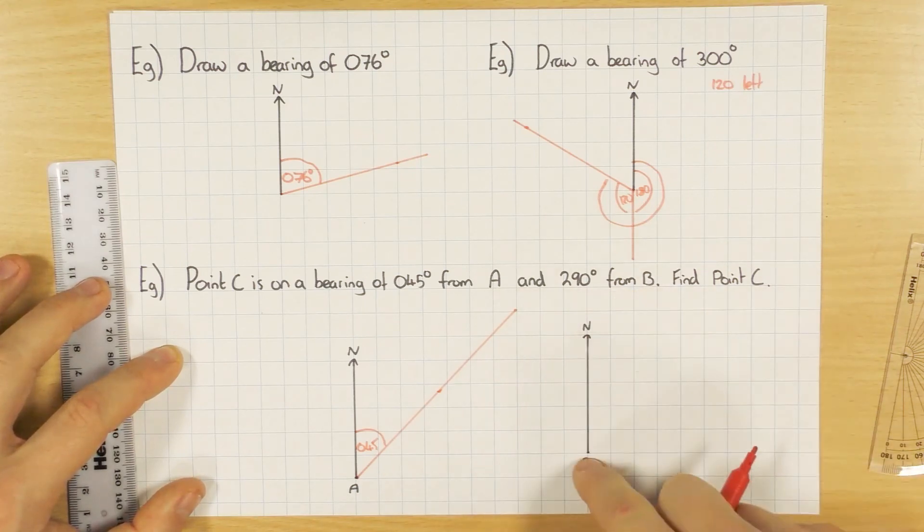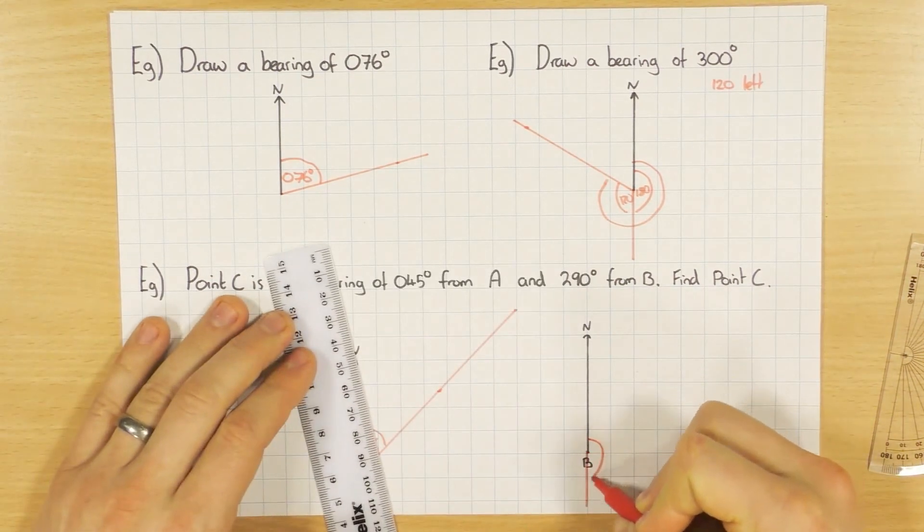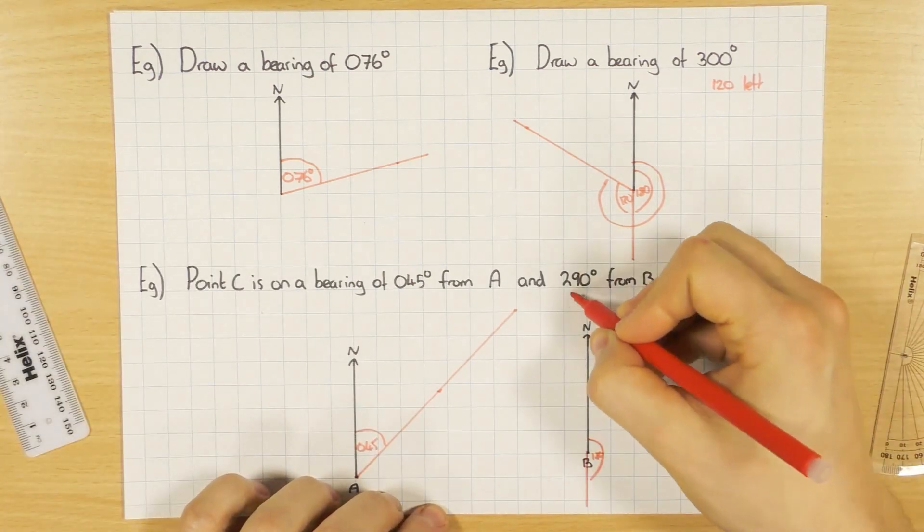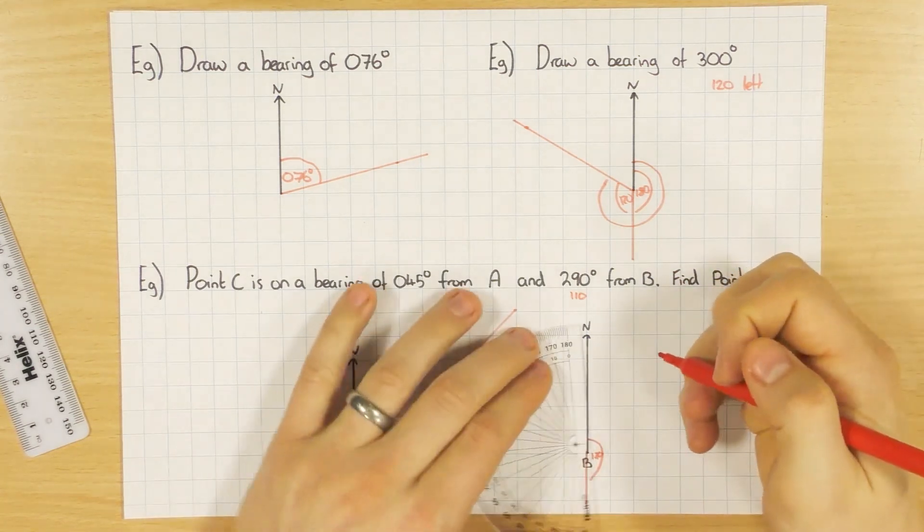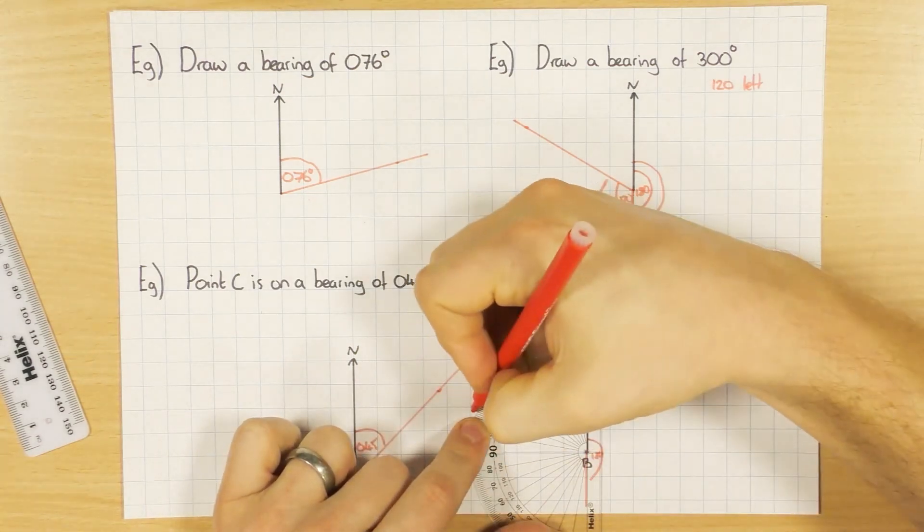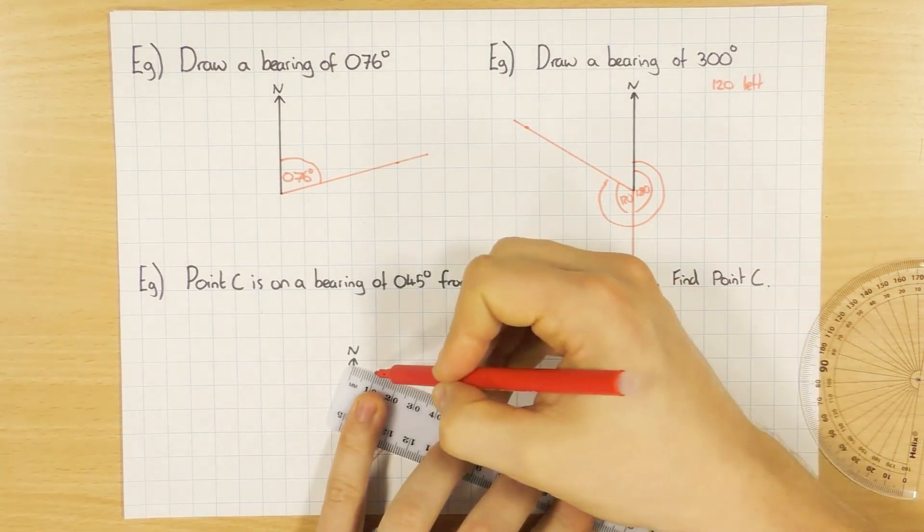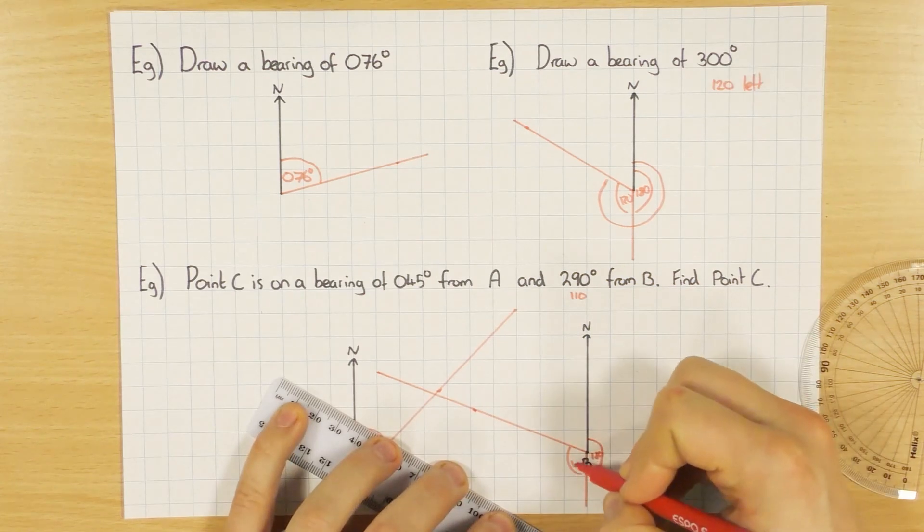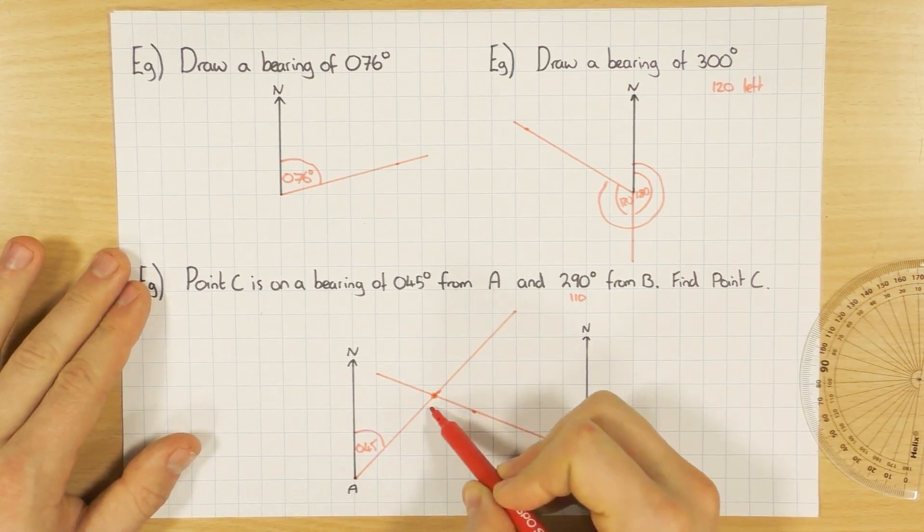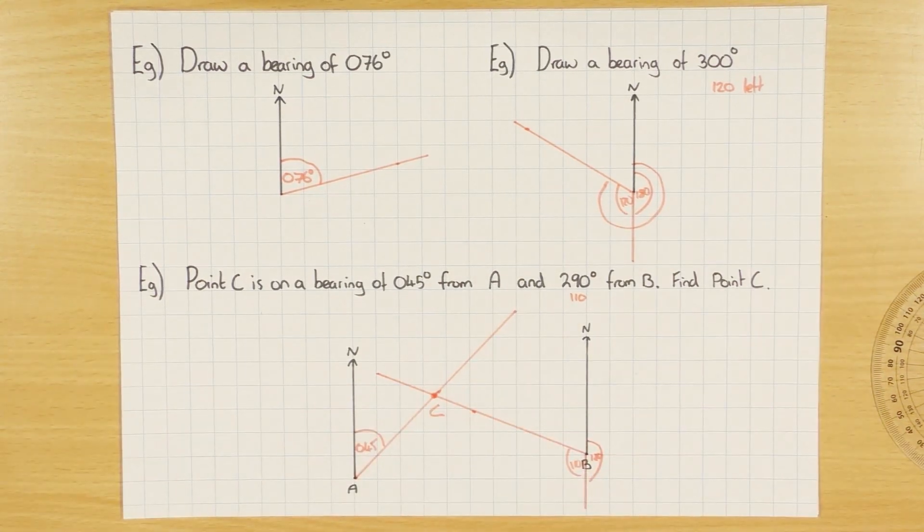And the next bit, 290 degrees from B. So from B means I'm here. So I'm just going to draw my south line on, because I know that's 180. And then what's left to get to 290? Well 110 is left. So again, I'm starting at zero, I'm going around, 110 is there. So I put a little mark there. Line it up. So 110 plus 180 is 290. And where they meet is point C. So a bearing from A, bearing from B, where do they meet - that's where C is.